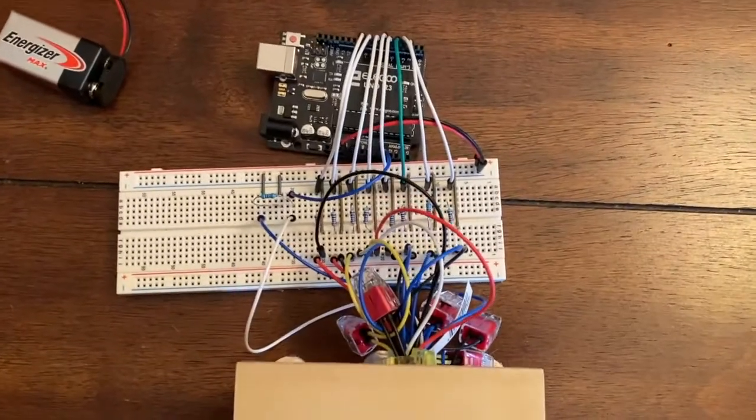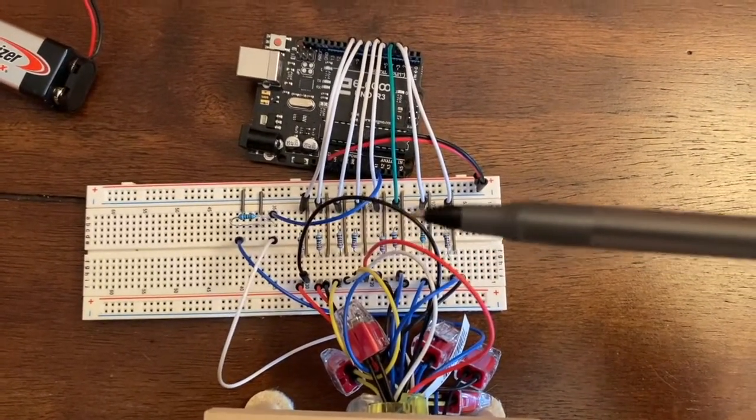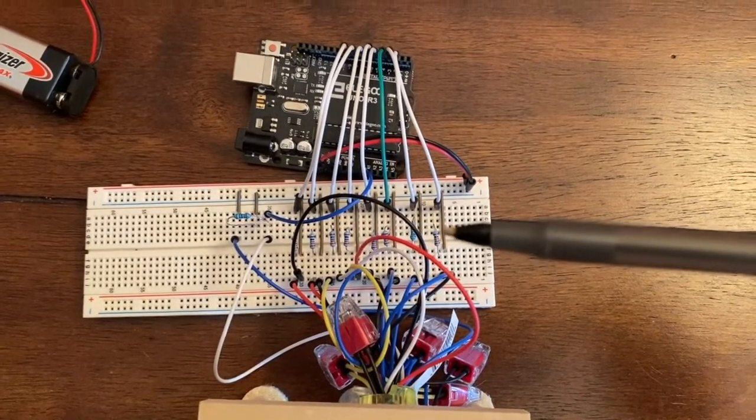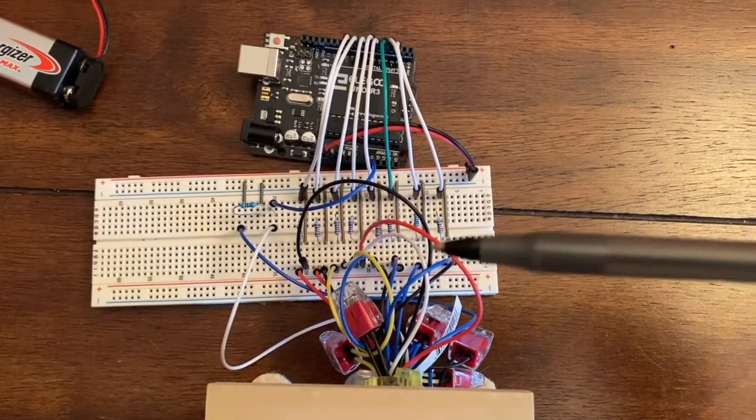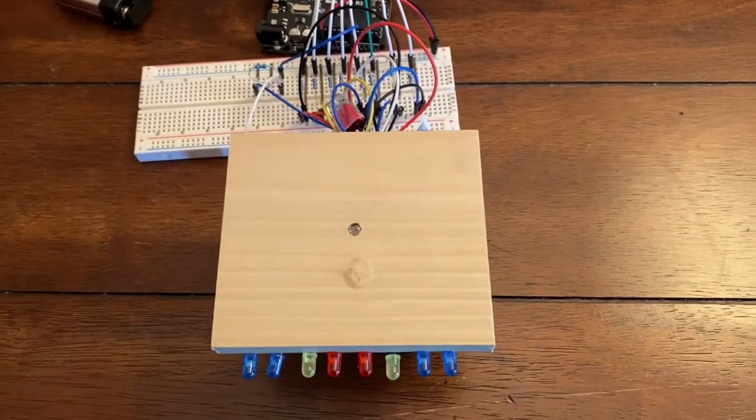The breadboard is mostly set up to run the lights. All this wiring here is meant to control the LEDs, but instead of the LEDs now being on the board, they're at the front of the stand.